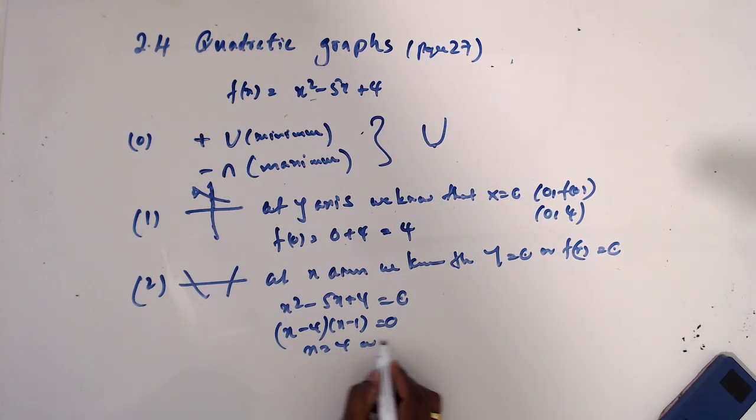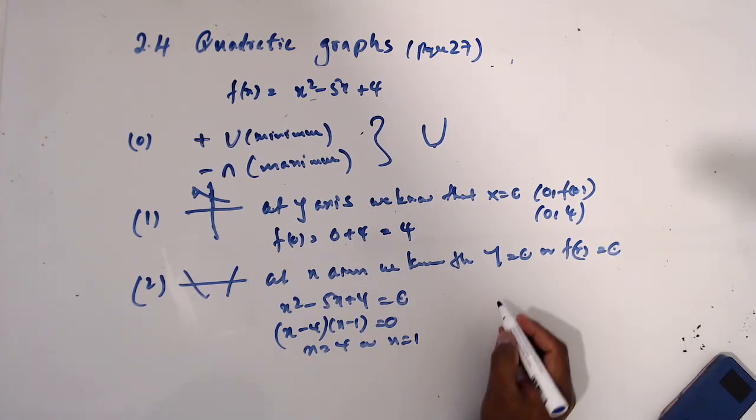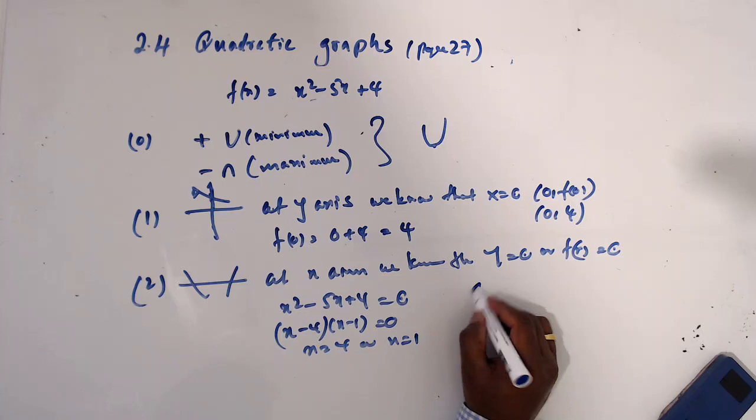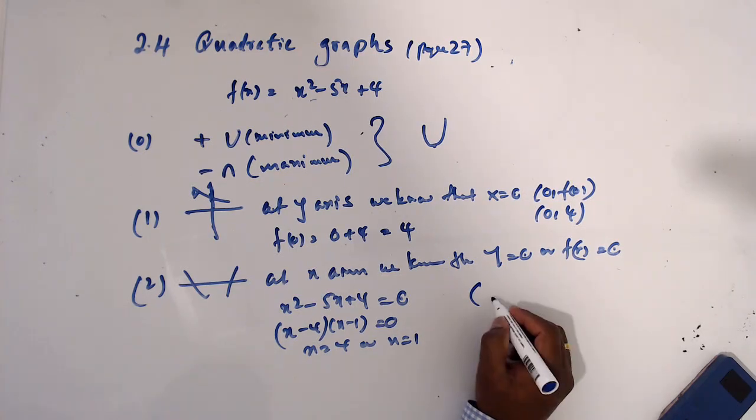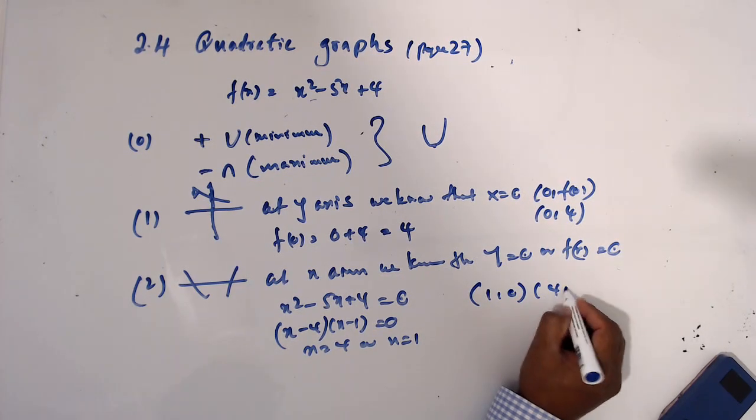x equals 4 or x equals 1. So now the roots are (1, 0) and (4, 0).